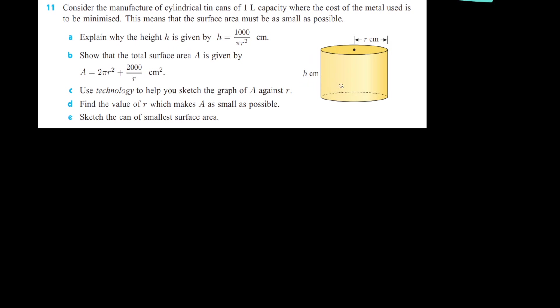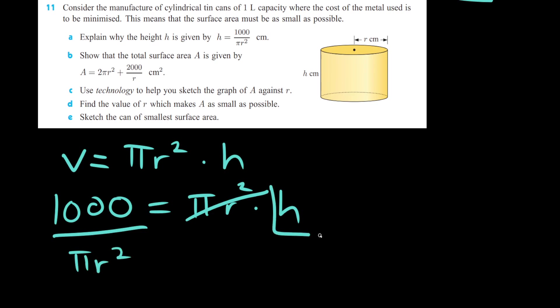Explain why the height h is given by h equals 1,000 divided by pi r squared centimeters. The volume of this cylinder is going to be the area of this circle multiplied by the height, which should make sense. So that'll be pi r squared times the height. But we know what the volume is. The volume is 1,000, which equals pi r squared times height. So we're just going to divide both sides by pi r squared. 1,000 over pi r squared is going to be our height.